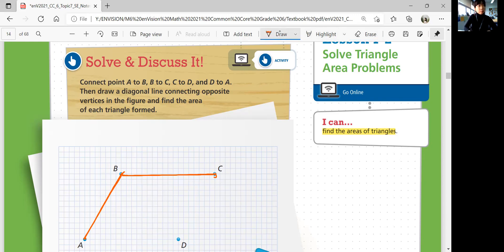And C to D. Okay, now we're going to draw a diagonal line connecting opposite vertices. They didn't specify which diagonal line, so why don't we connect A and C. There.